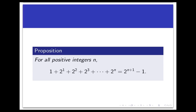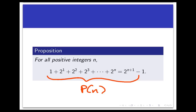So let's go back to the proposition we saw earlier and prove it by mathematical induction. The proposition says that for all positive integers n, the sum 1 plus 2 to the first plus 2 to the second, all the way to 2 to the nth, is equal to 2 to the n plus 1 minus 1. Let p of n be the predicate represented by this entire equation. We put in a value of n and we get a statement that's either true or false. We're trying to prove that the predicate is true for all positive integers n.